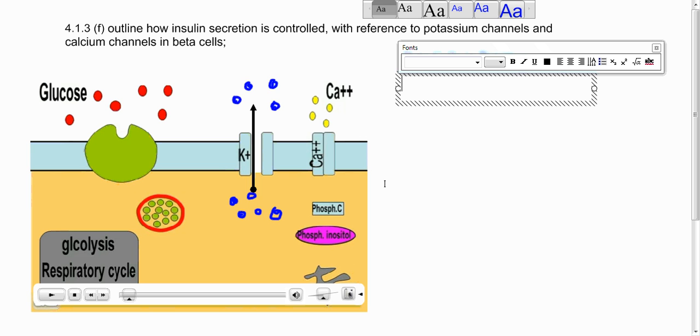What this does initially is it produces a membrane potential across the membrane, a membrane potential of about -70 millivolts. So a similar value to what you saw before when you were learning about nerves and action potentials. So that's in a normal state of affairs - the potassium channel is open and they move down their concentration gradient to the outside of the beta cell.